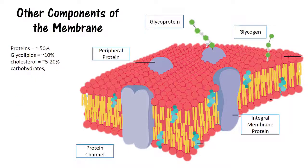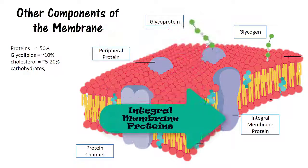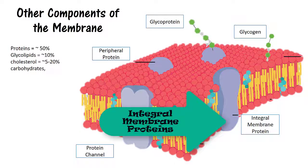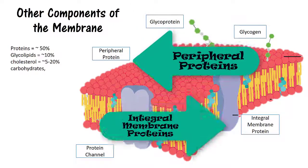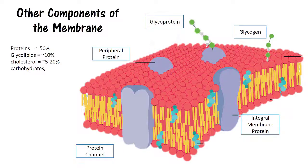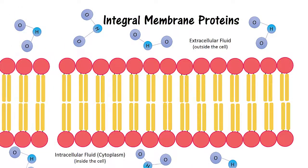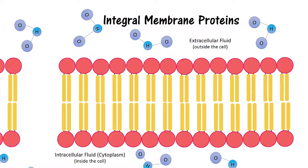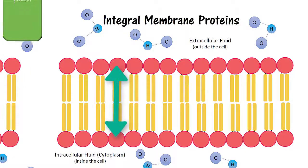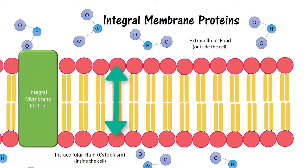This is kind of how proteins and other molecules can move around within the plasma membrane. There are two major classes of membrane proteins: integral membrane proteins and peripheral proteins.